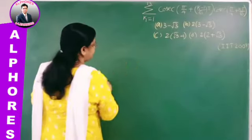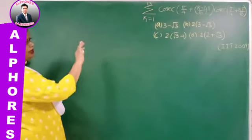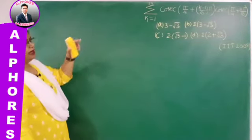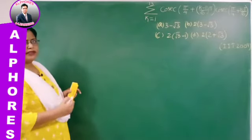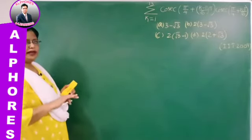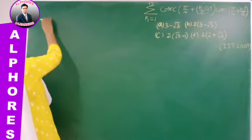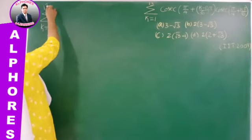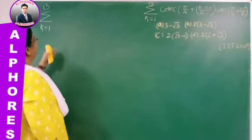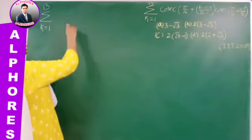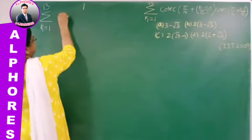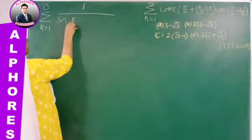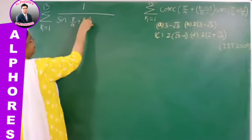Let us start the problem. We won't expand by putting K = 1, 2, 3 directly — instead, we'll write cosecant θ as 1/sin θ. So this becomes sigma K = 1 to 13. The cosec values are written as 1 divided by sin(π/4 + (K−1)·π/6) times sin(π/4 + K·π/6).